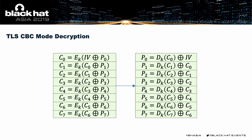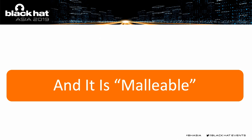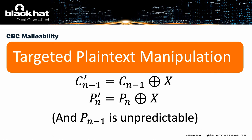To decrypt, it's a pretty trivial reversal: on the encryption side we're XORing and then encrypting, so to decrypt we first decrypt and then XOR. This process is called MAC-then-pad-then-encrypt, and cryptographers refer to this as malleable encryption. The reason is that the use of XOR allows for targeted plaintext manipulation, and the message isn't necessarily fully authenticated. If you flip a bit within a particular ciphertext block, it's going to flip a corresponding bit in the plaintext of the next ciphertext block.